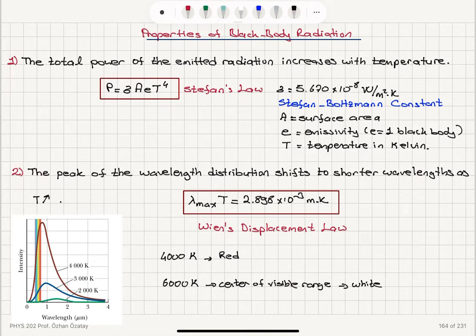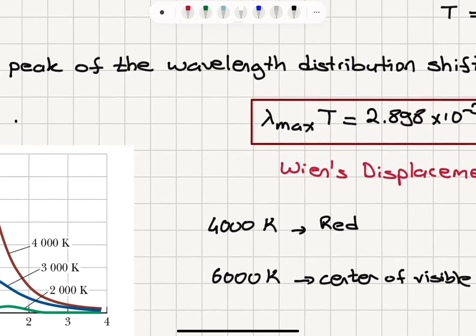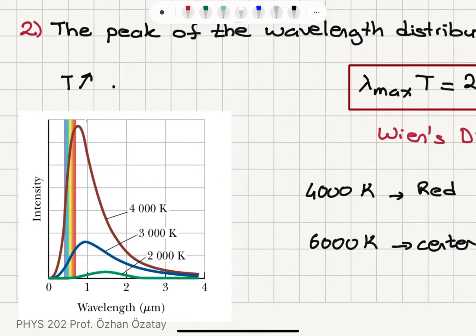The second important property of black body radiation is that the peak of the wavelength distribution shifts to shorter wavelengths as temperature increases. So when we look at the intensity distribution as a function of wavelength, we have a peak in the wavelength distribution. And this peak shifts to basically smaller wavelengths as the temperature increases.